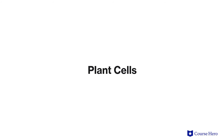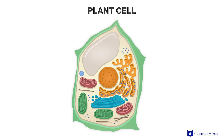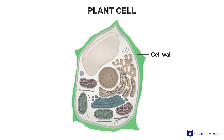Let's take a look now at some organelles that are exclusive to plant cells. Unlike animal cells, plant cells are generally rectangular in shape and tend to be larger than animal cells. This rectangular shape is due to the presence of a cell wall, which is not found in animal cells. Cell walls are made of cellulose, a tough material that, in addition to maintaining the cell's shape, provides protection to the cell and the plant as a whole.